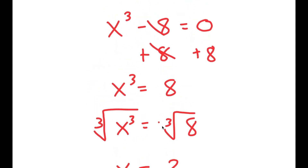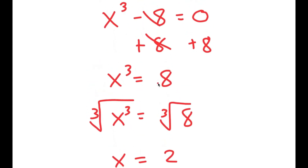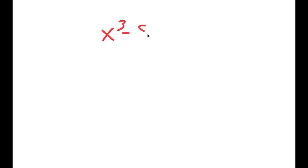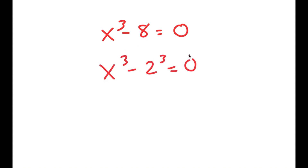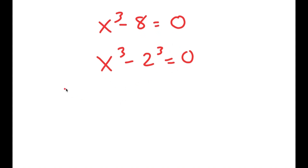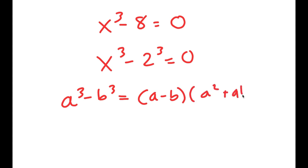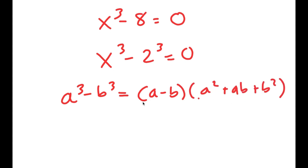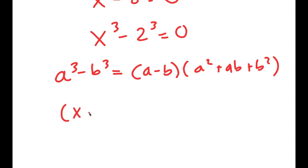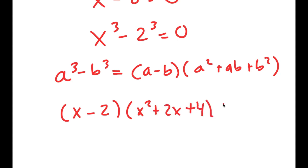But actually, there are more than one solution to this equation. I'm going to rewrite the equation x to the power of 3 minus 8 equals 0, and rewrite 8 as 2 to the power of 3. So I get x to the power of 3 minus 2 to the power of 3 equals 0. Now I'm going to use the formula a³ minus b³ equals a minus b times a squared plus ab plus b squared. This turns into x minus 2 times x squared plus 2x plus 4 equals 0.